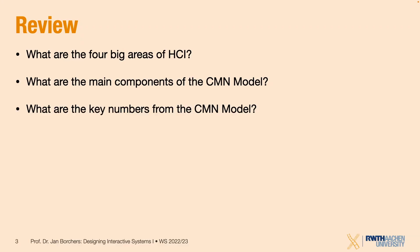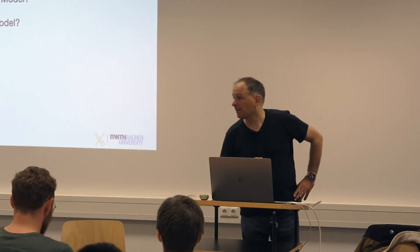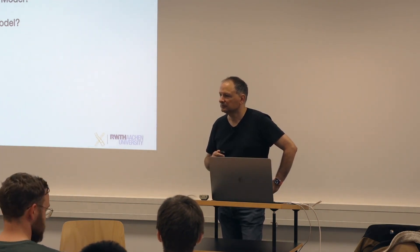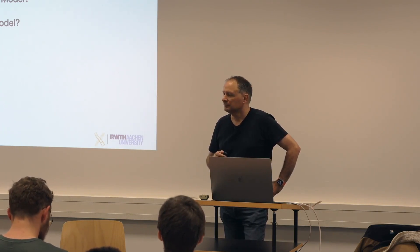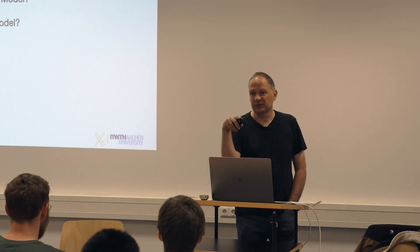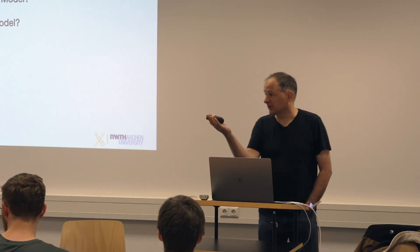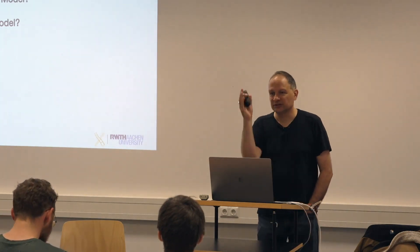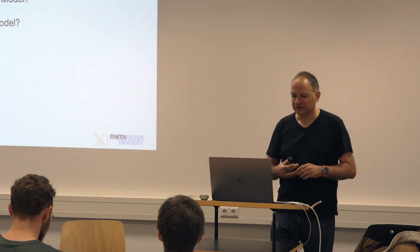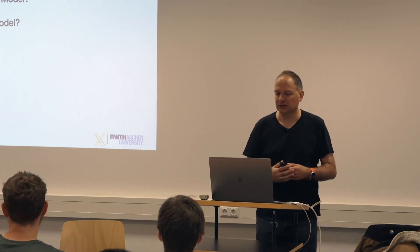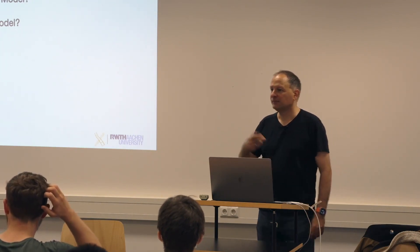The CMN model gives us key numbers. Perception time is about 100 milliseconds. The motor processor open loop is about 70 milliseconds. The cognitive processor also takes about 70 milliseconds to retrieve one simple if-then mapping — executing a simple rule. If what you need to do in response to a stimulus is more complex, time will get longer appropriately.